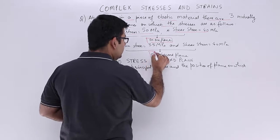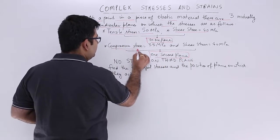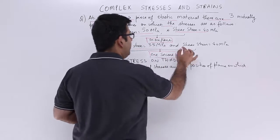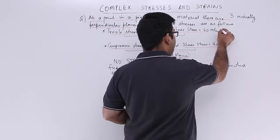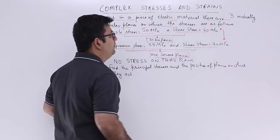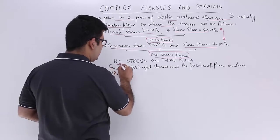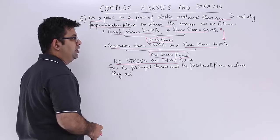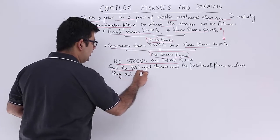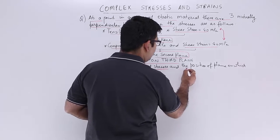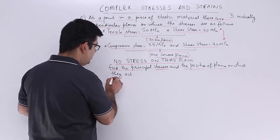On the second plane we have a compressive stress of 35 MPa and a complementary shear stress of 40 MPa which is complementary to the above shear stress. There is no stress on the third plane which is the case in most problems. Find the principal stresses and the position of the plane on which they act.